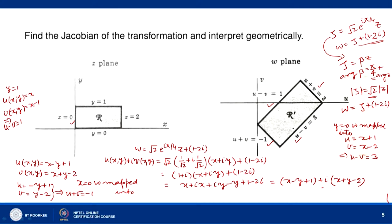The area of the rectangular region R in the z-plane is: length 2 and width 1, so area = 2. In the w-plane, we have u + v = -1. We can find the point where u = 0, giving the point (0, -1).